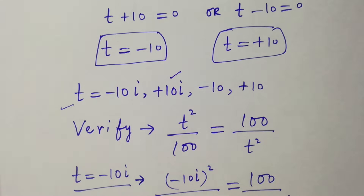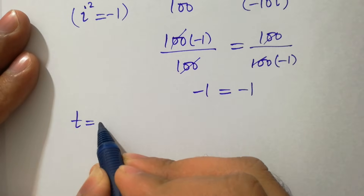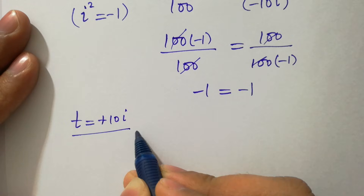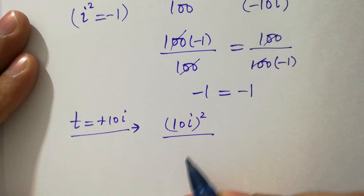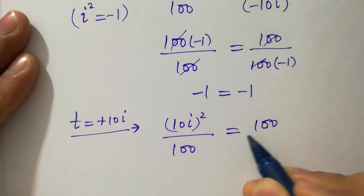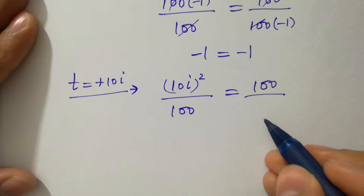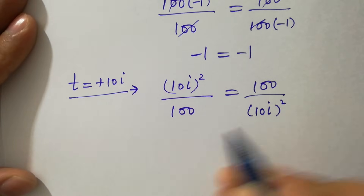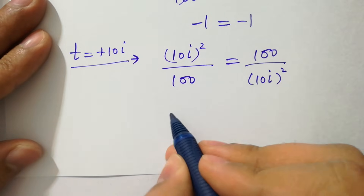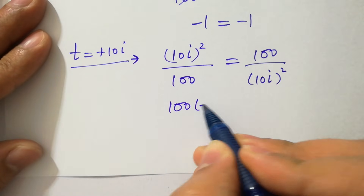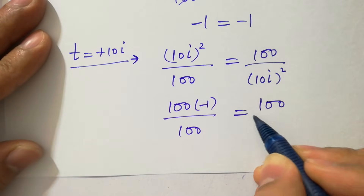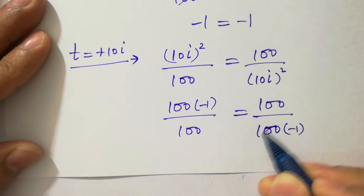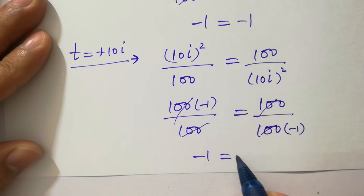Now take t equal to plus 10i and put into this equation. We have 10i squared over 100 equal to 100 over 10i squared. We have 100 times i squared, which is minus 1, over 100 equal to 100 over 100 times minus 1. 100 cancels and we get minus 1 equal to minus 1.